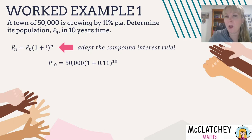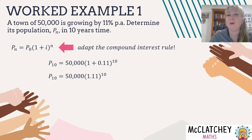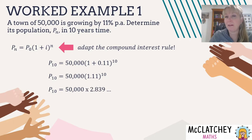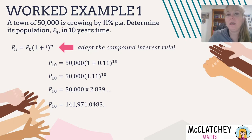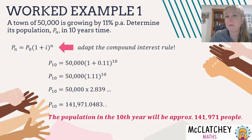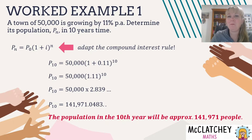Following order of operations — BIDMAS — I start with the brackets: 1 + 0.11 = 1.11. Then I (indices): raise 1.11 to the power of 10, giving 2.839... Don't round early — leave that on your calculator. Then multiply 50,000 by 2.839, giving P₁₀ = 141,971.0483. It's important to give a statement and round appropriately — you can't have 0.0483 of a person, so round down to the nearest whole number of people.